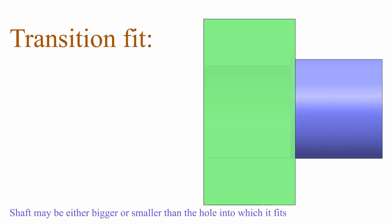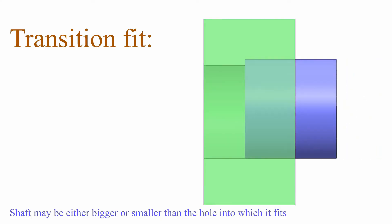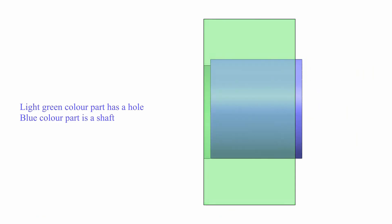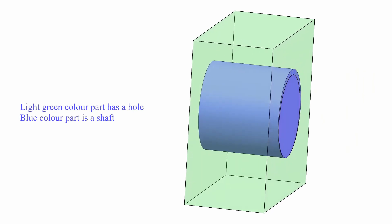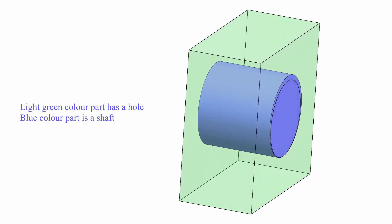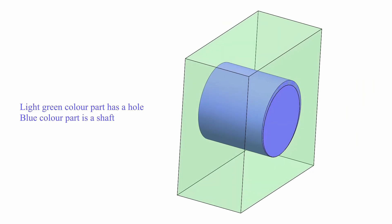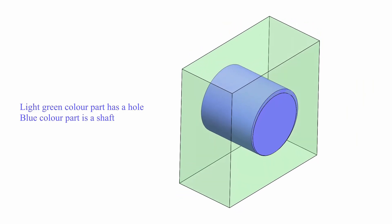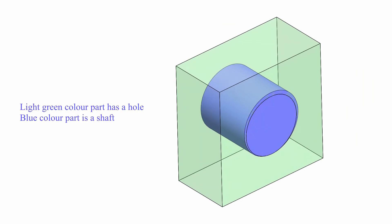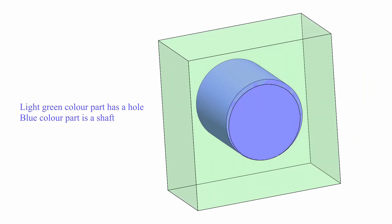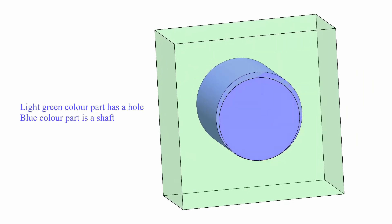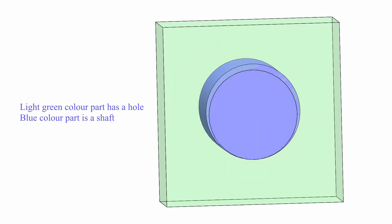In a transition fit, the shaft may be either bigger or smaller than the hole into which it fits. Assembly usually requires press tooling or mechanical assistance, creating close accuracy with little or no interference. Sub-classifications include: push fit, used as a snug fit; force fit, used in railway wheels; and ringing fit, used in keys and pins.